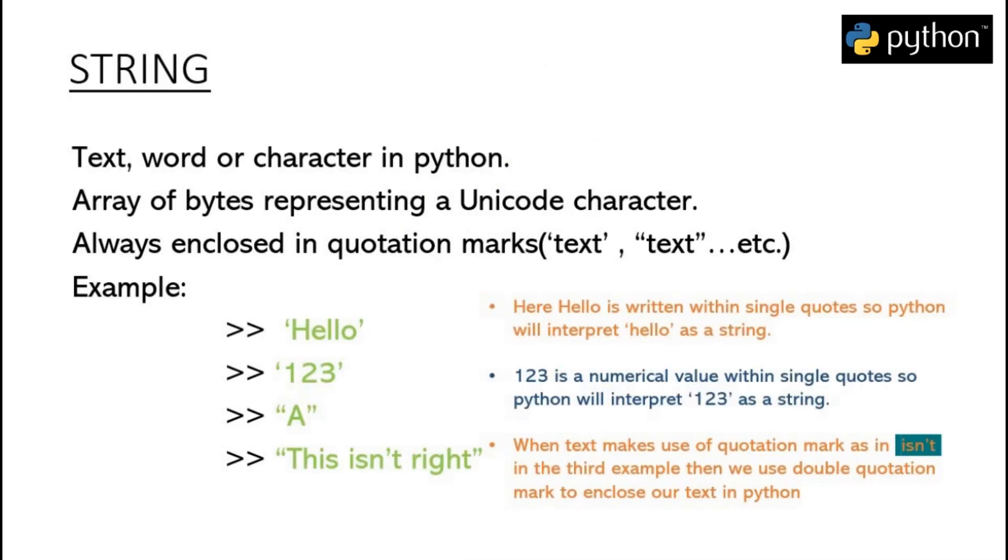So in our session of data types, we saw that some data types are sequential in nature such as list, dictionary, tuples, etc.